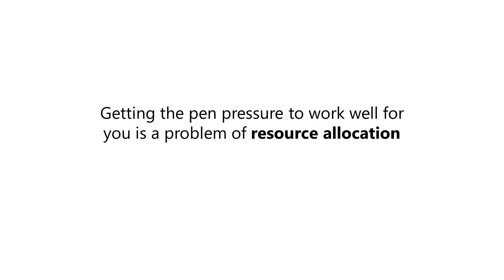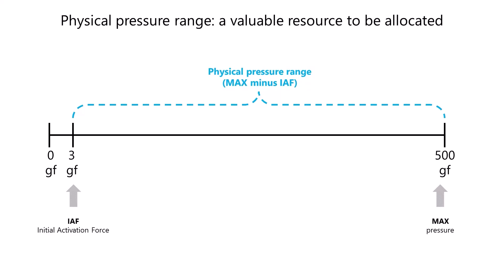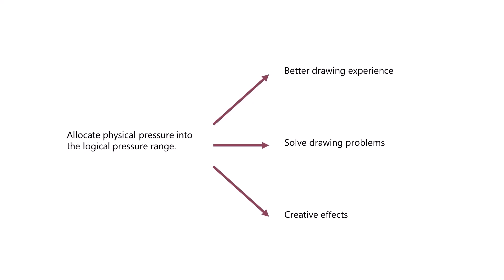I like to think about this as a game of resource allocation. We have a finite resource and we are trying to spend it wisely. The finite resource in this case is the physical pressure range of the pen — the difference between the maximum physical pressure and the initial activation force for a specific pen. Our job is to allocate segments of this physical pressure range to help us draw, solve problems while drawing, or achieve certain effects with our brush strokes.